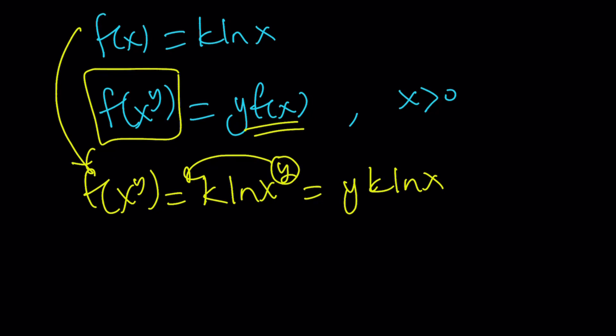Now, what about the second part? y f of x can be written as y times f of x, which is k ln x. y times k ln x can be written as y k ln x. And notice that these two are the same, which means our solution checks.